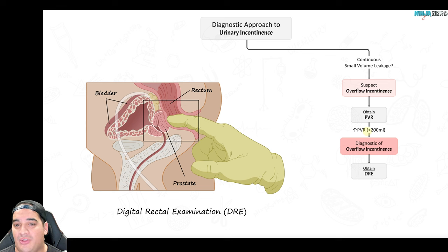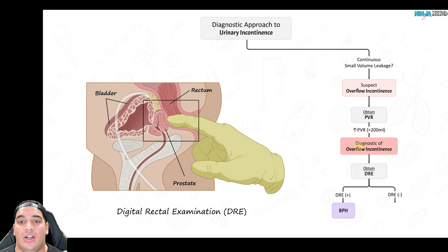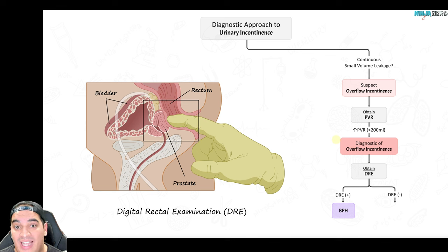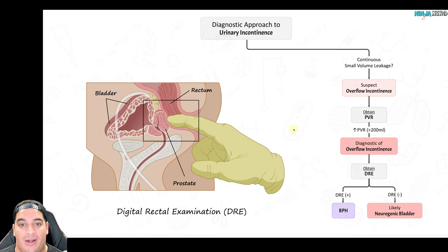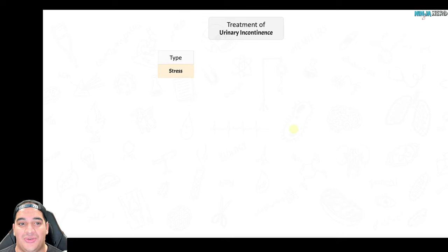To determine which cause: perform a digital rectal exam (DRE). If the prostate is very enlarged, BPH is likely compressing the prostatic urethra. If the DRE is negative and the prostate isn't enlarged, consider neurogenic bladder from neurological diseases like diabetes or MS, or medication-induced causes — try discontinuing those medications and see if the patient improves.